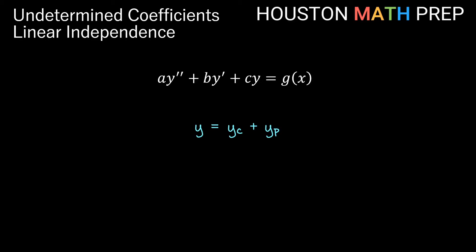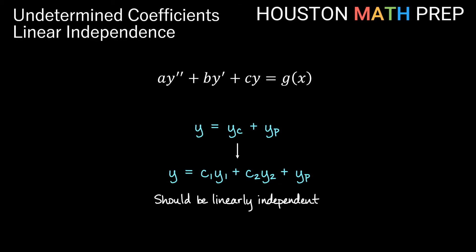For a second-order equation, our complementary function is going to be made up of two pieces — some linear combination of two functions y1 and y2 — and we want to note that y1, y2, and y sub p all need to be linearly independent. If the form we would normally choose for y sub p is a constant multiple or linear combination of what we have from y1 and y2, then we get linear independence by multiplying what we would normally choose for y sub p by x.